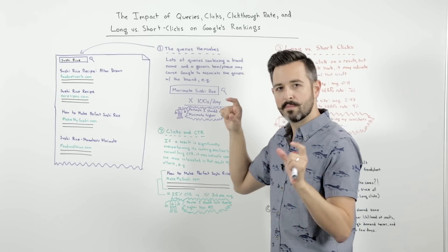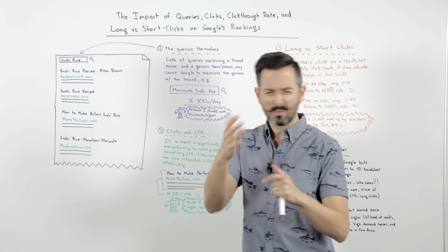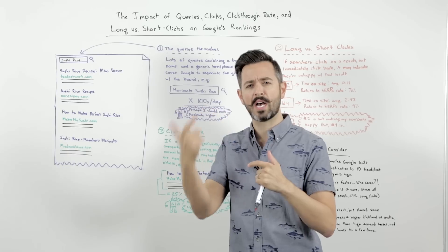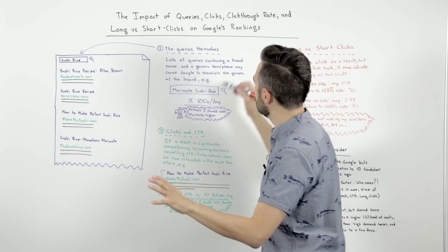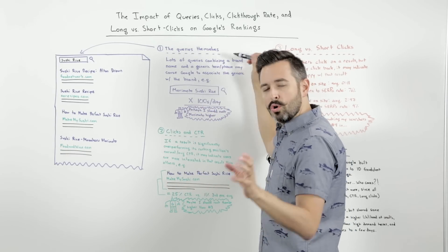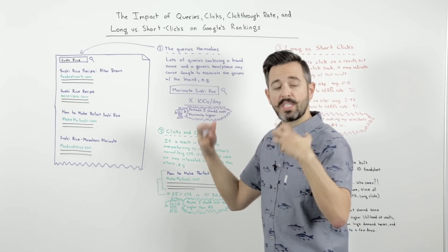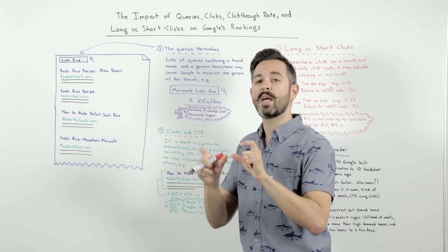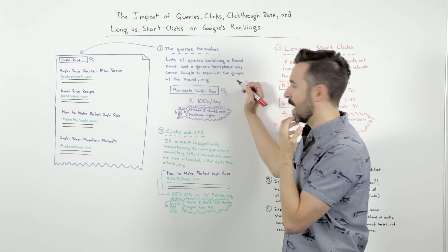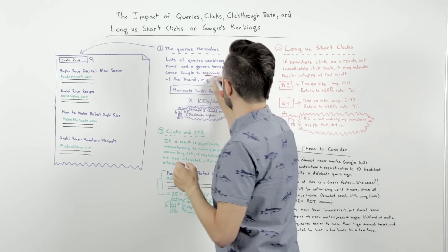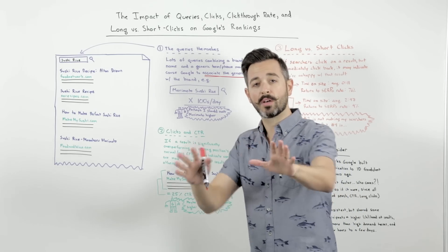First off is queries themselves. This has to do primarily with a patent application that Google wrote around site quality and the quality of search results. Queries themselves could be used in the search results — Google might see a lot of searches that are combining a brand name with a generic term or phrase, and because of that, they might start to associate the generic term with the brand term. Let me give you an example.